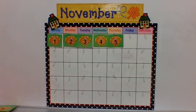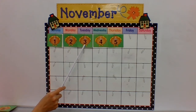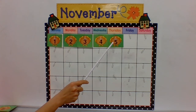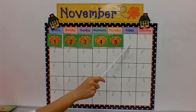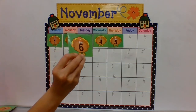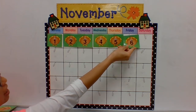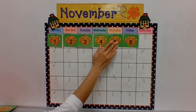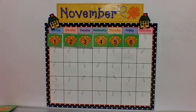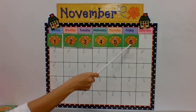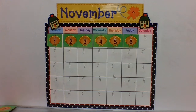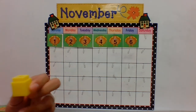Okay, let's count. Here's the question: how many days in November? Count with me please: one, two, three, four, five, six. So today is November 6th — it is a Friday, November 6. This is the number six — one, six. Let's stack six, ready!